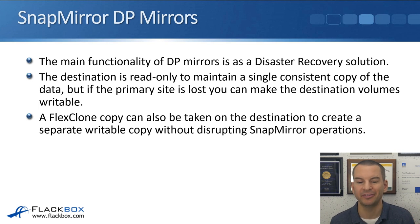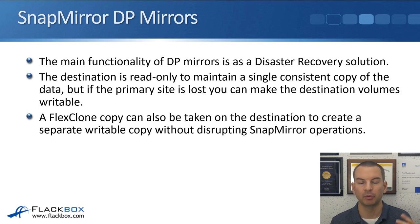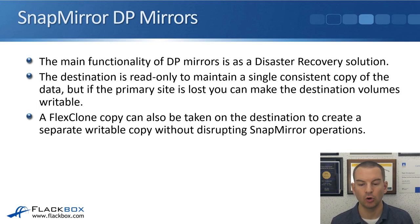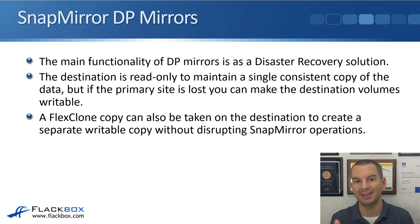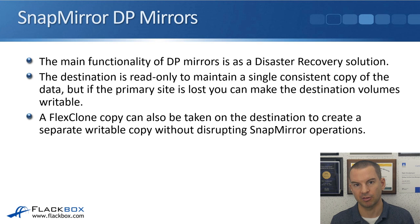The main functionality of DP mirrors is as a disaster recovery solution. The destination is read-only under normal conditions to maintain a single consistent copy of the data. But if the primary site is lost, you can failover and make the destination volumes writable. Also, a FlexClone copy can be taken on the destination to create a separate writable copy without disrupting SnapMirror operations — useful when the main site is still up but you need a writable copy on the destination side.